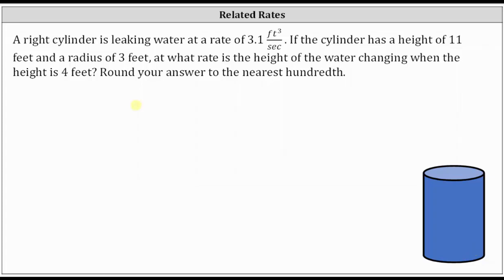First, we need to begin with the volume formula for a right cylinder, which is V equals pi r squared h, which is really just the area of the base times the height.